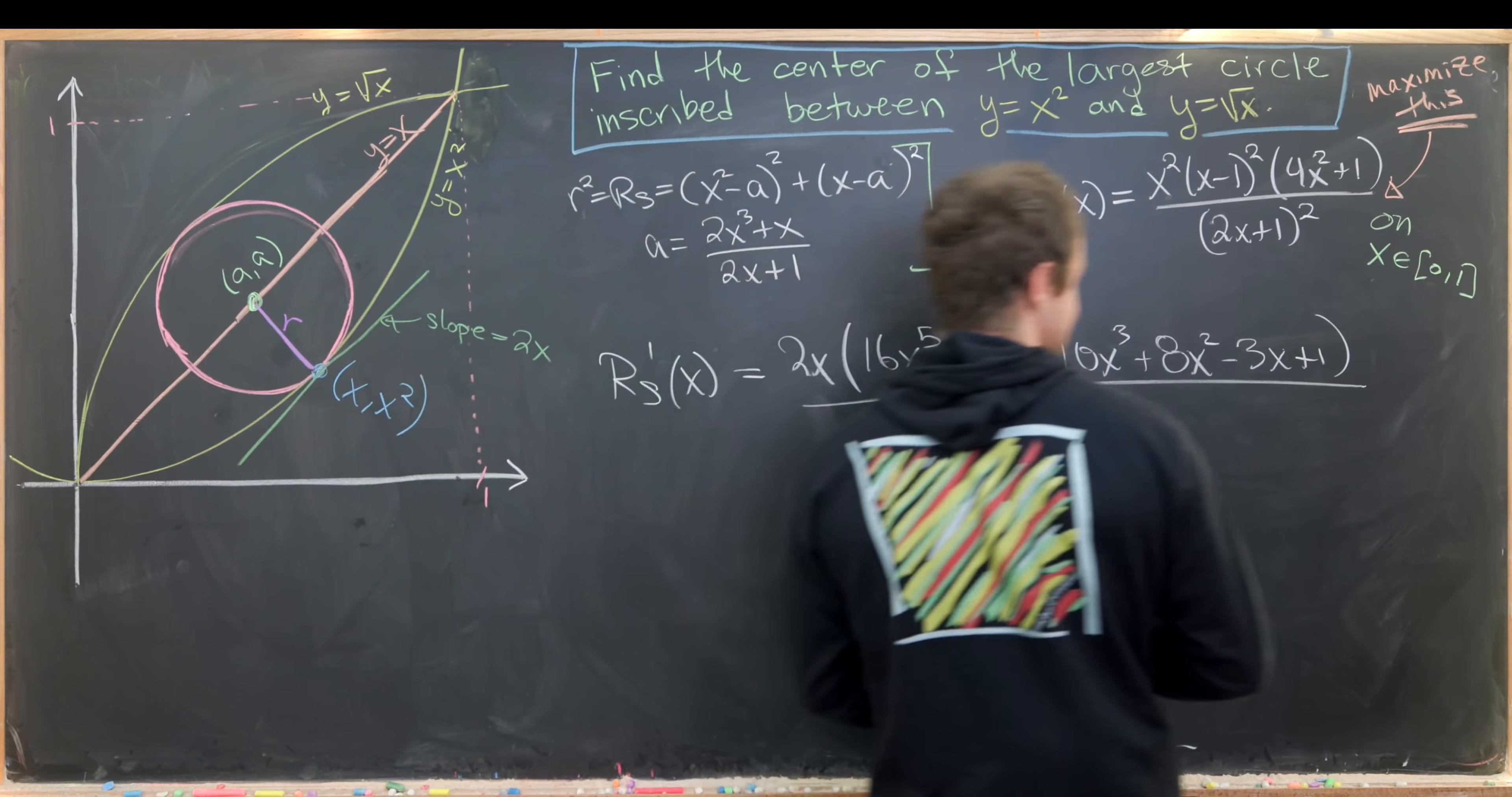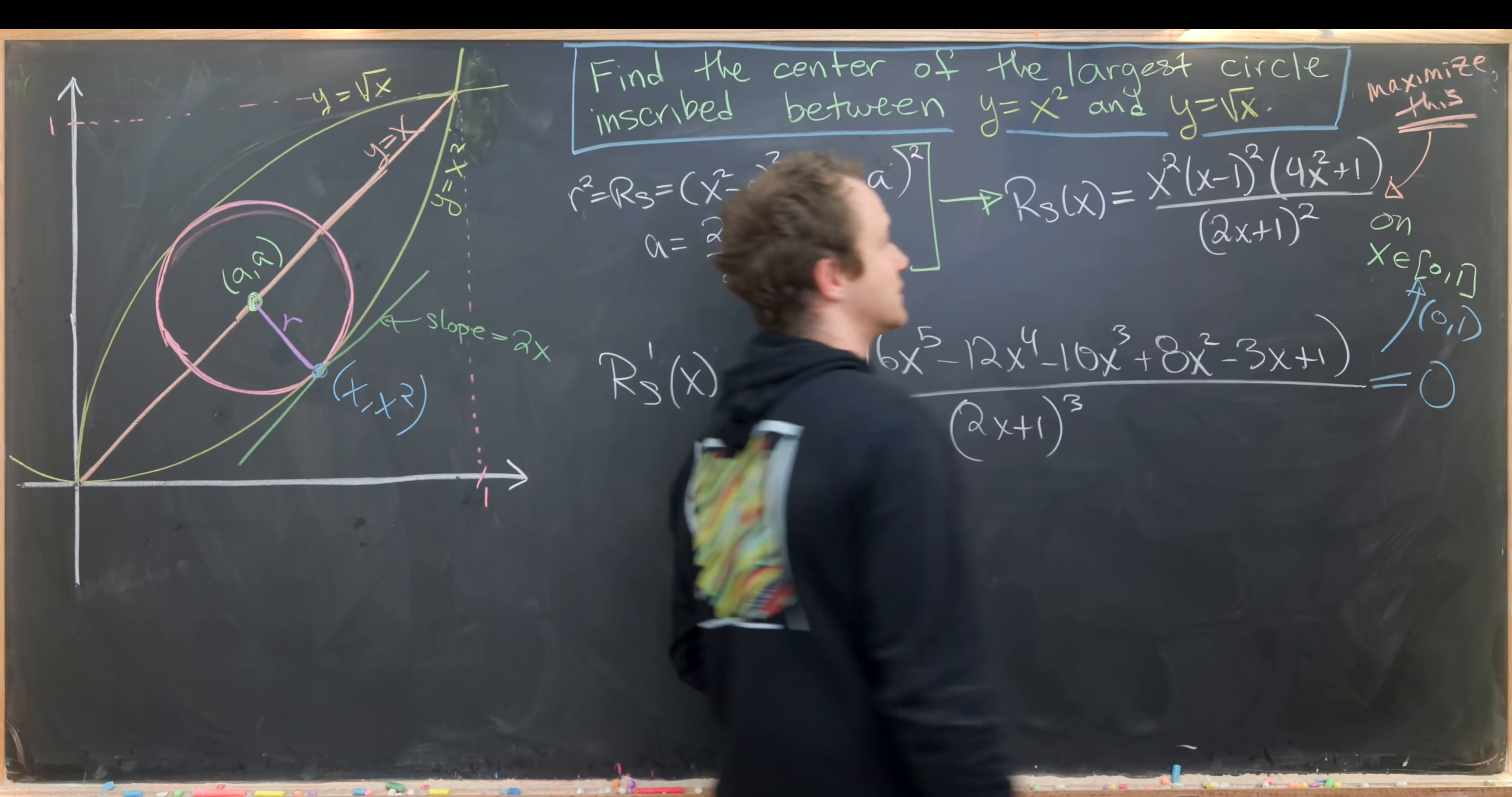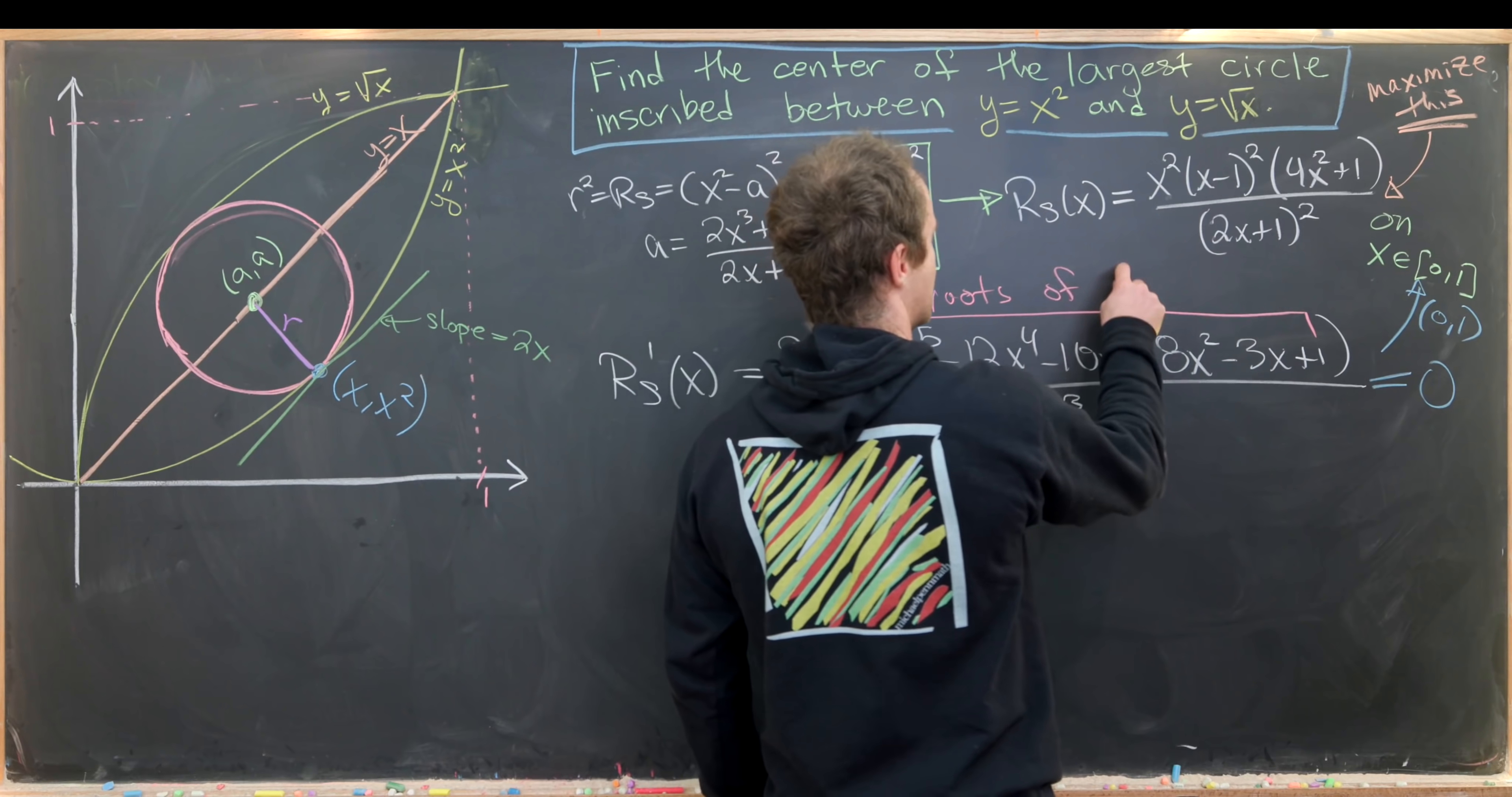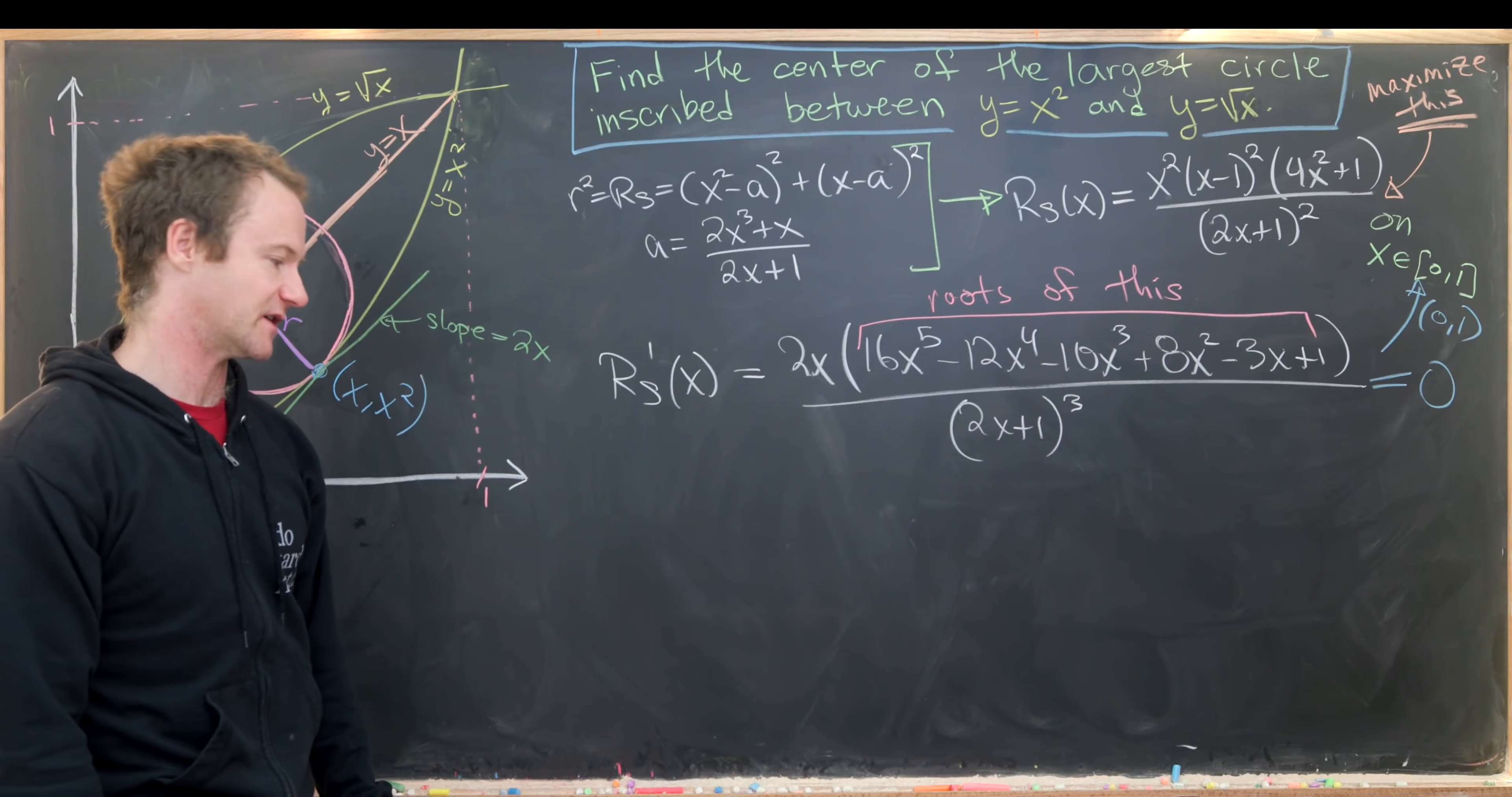Now we need to set this equal to 0 and solve in the region 0 to 1, not including 0 and 1, because we've already discussed why those will give us minimums. The real question is: how do we find roots of this polynomial? This is a fifth degree polynomial, so this could be quite tricky.